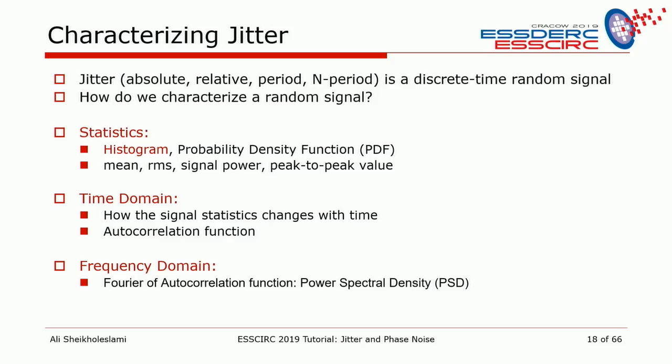Statistics tells us about data values but not timing behavior. The random signal may be fast-changing or slow-changing, correlated or uncorrelated. For time domain characterization, we use the autocorrelation function, which can reveal how fast the signal is changing even though it's random. The Fourier transform of the autocorrelation gives the power spectral density. Power spectral density and autocorrelation give the same information in two different domains.